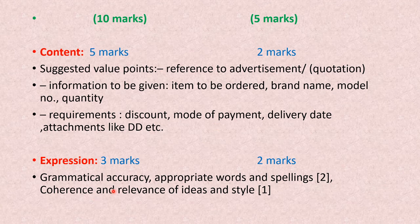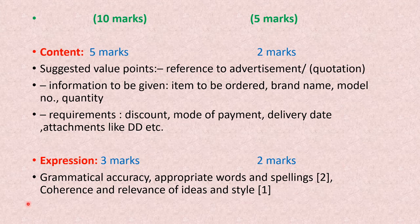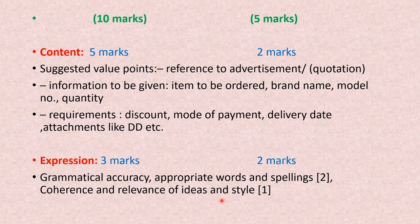After that comes expression: 10-mark letters — expression is 3 marks; 5-mark letters — expression is 2 marks. Expression includes grammatical accuracy, appropriate words and spellings, coherence and relevance of ideas, and style. Coherence means don't scatter related points across paragraphs — for example, don't write about mode of payment in one paragraph and discount in a completely different place. Talk about everything related to transportation at one place. Appropriate formal vocabulary is also checked.